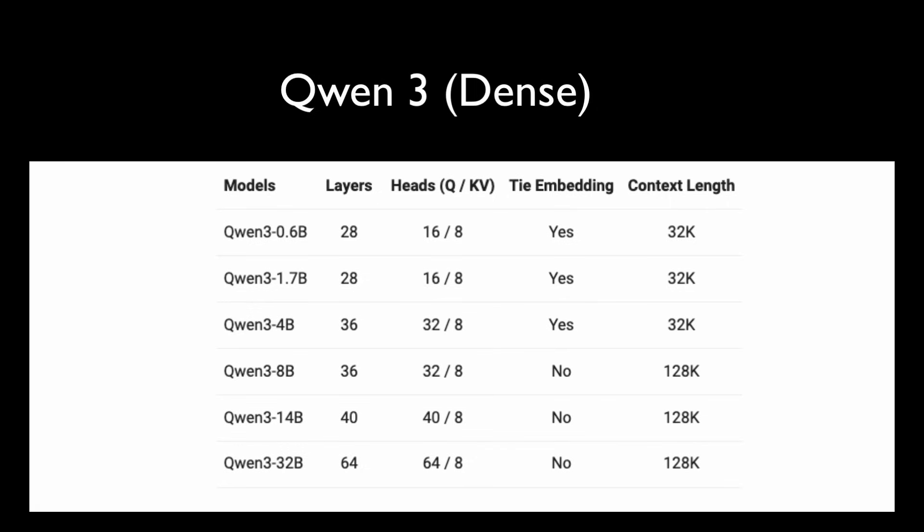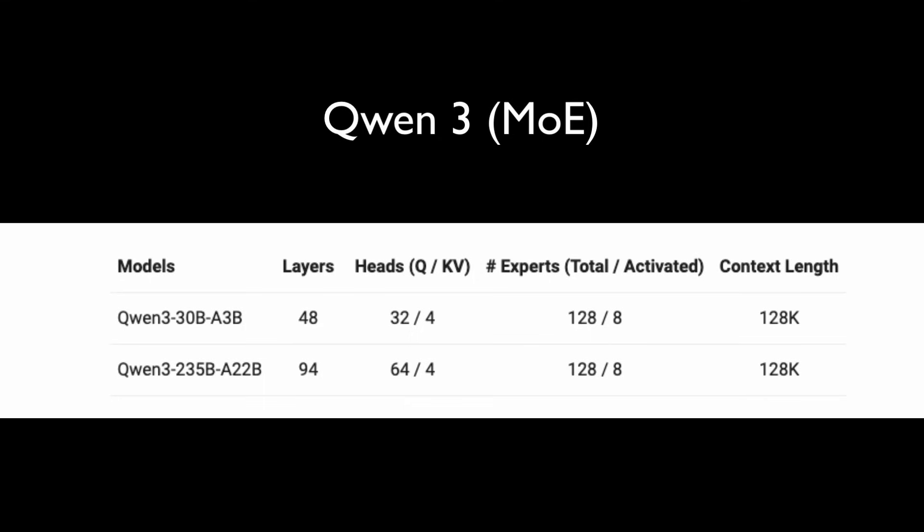Qwen3 comes in dense model sizes ranging from 0.6 billion parameters to 32 billion parameters, which is one of the biggest reasons why this is the king of local models. Then we have the MOE models — the mixture of experts models. These include Qwen3 30B A3B, where 30 billion is the total size of the model and 3 billion are the active parameters.